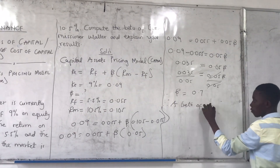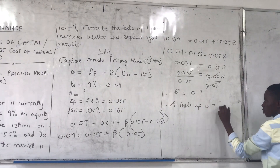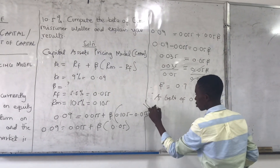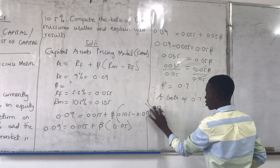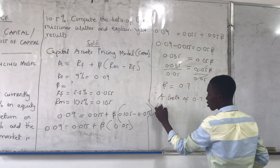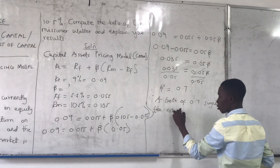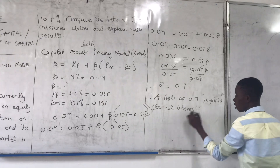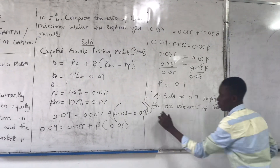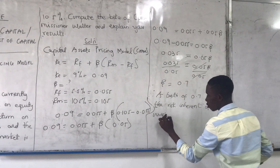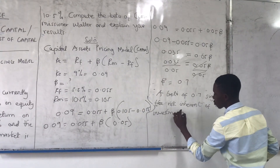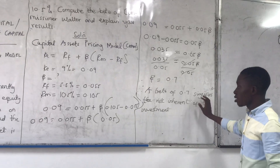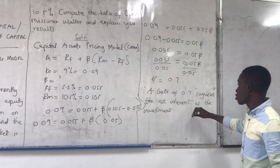A beta of 0.7 signifies the risk inherent in the investment. This is our result for Commercial Water — beta of 0.7 signifies their inherent investment risk.